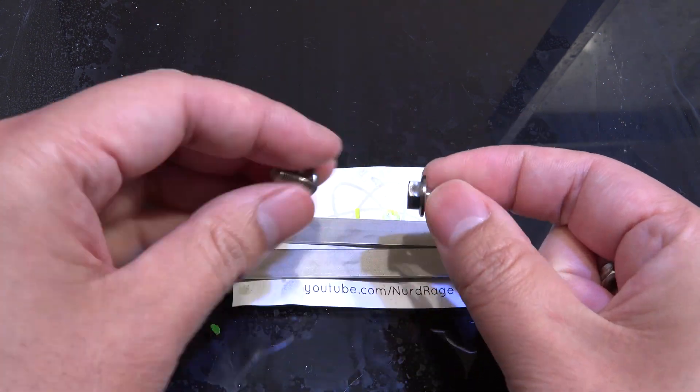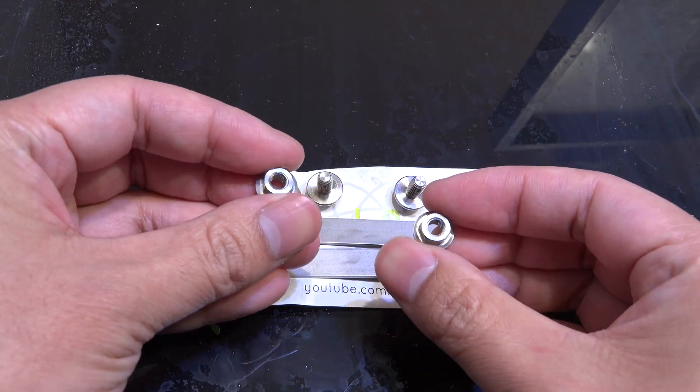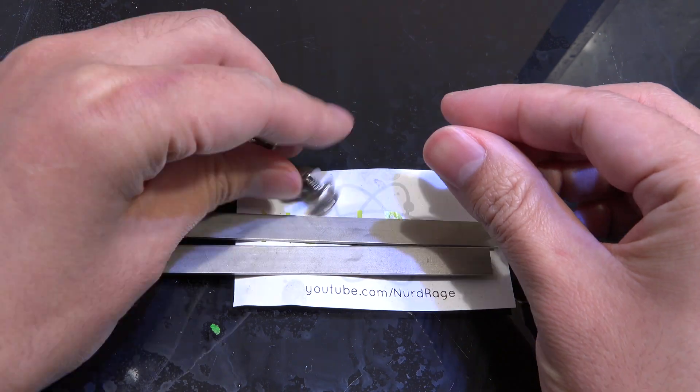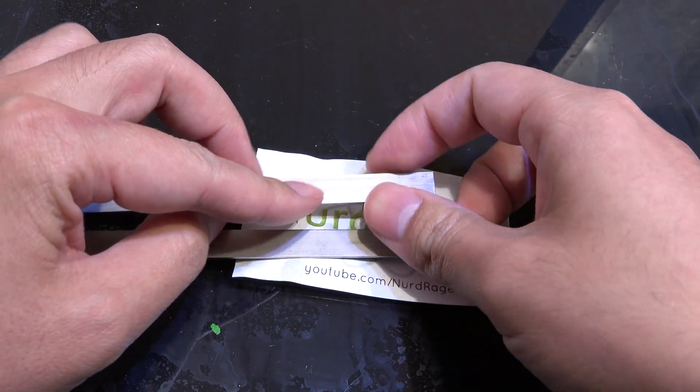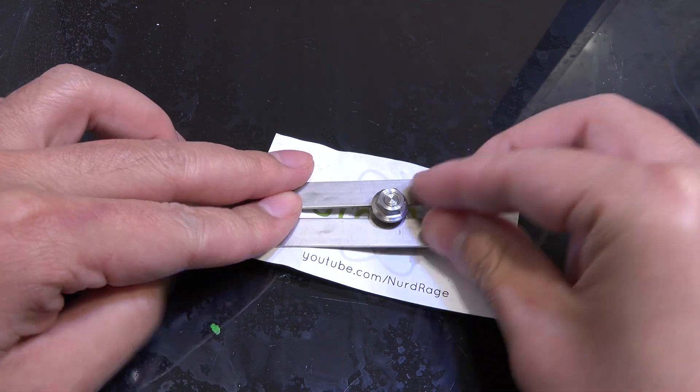We're also going to need some titanium bolts as well as matching titanium nuts. Screw them together. Now align them to the titanium strips in parallel and place the titanium nuts and bolts between the strips.